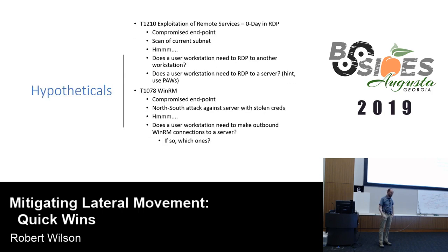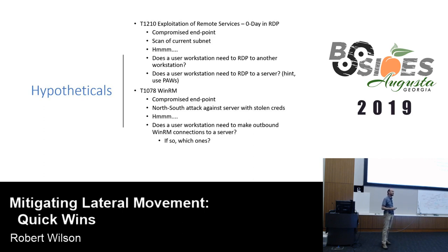Two hypothetical situations. First: the exploitation of remote services. There was a zero-day in RDP a little while ago — the BlueKeep stuff — which took a long time for a working exploit, but let's say there was one. You have a compromised endpoint, that person scans the current subnet, and RDP should not be listening on workstations in this scenario. The second one is WinRM, which is awesome in itself. But if I'm going to make an outbound WinRM connection somewhere, should a theoretical accountant be allowed to make outbound WinRM connections? Probably not. That computer needs to be managed via WinRM, but they probably don't need to make outbound WinRM.